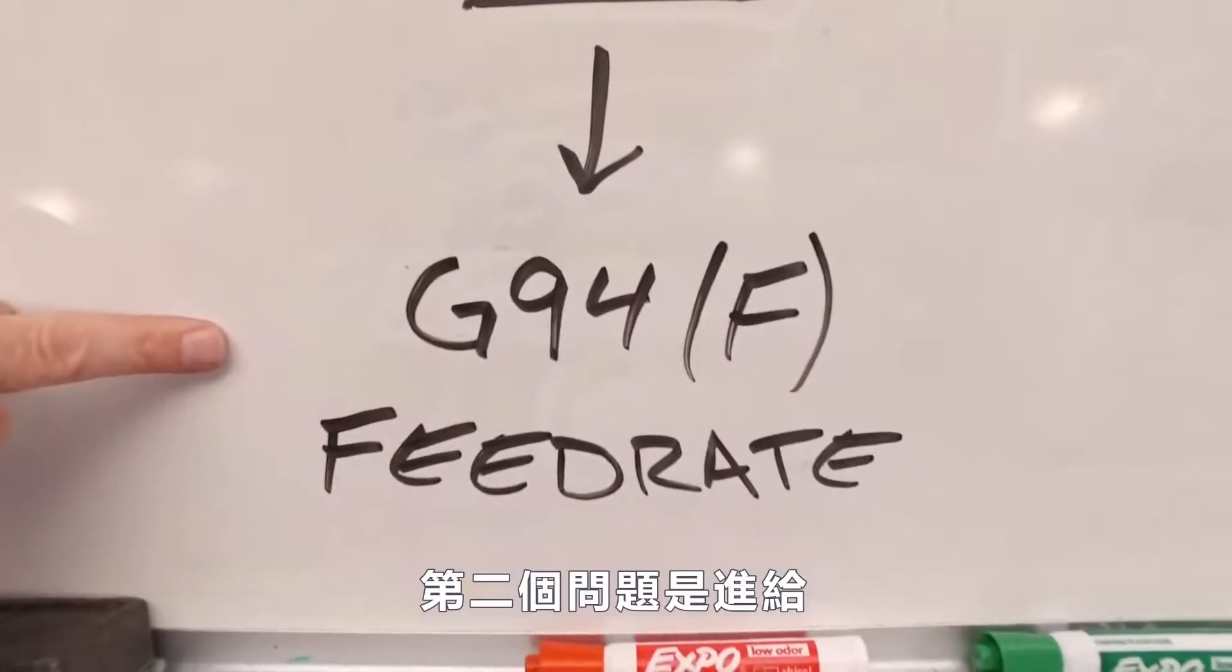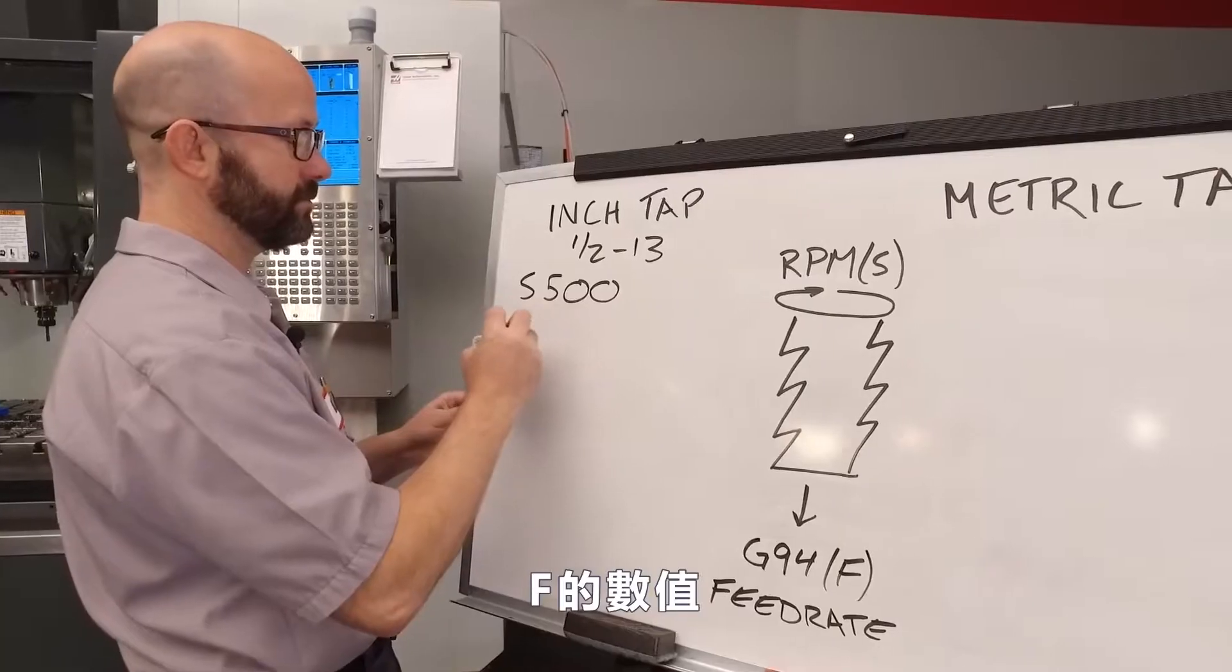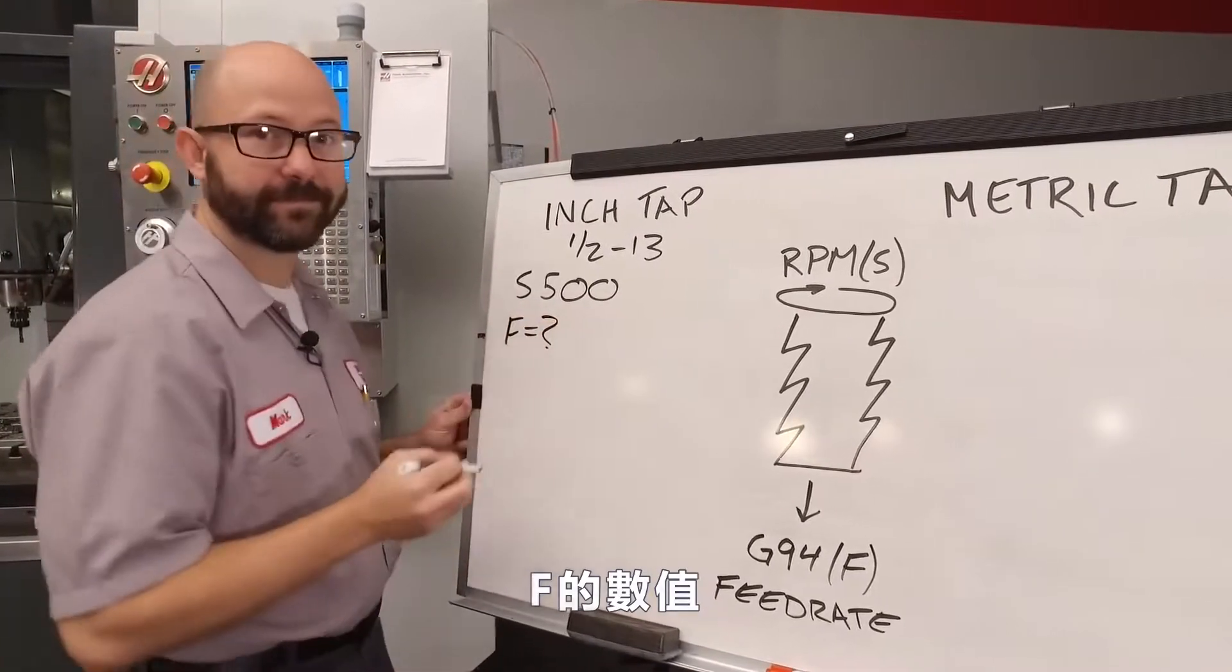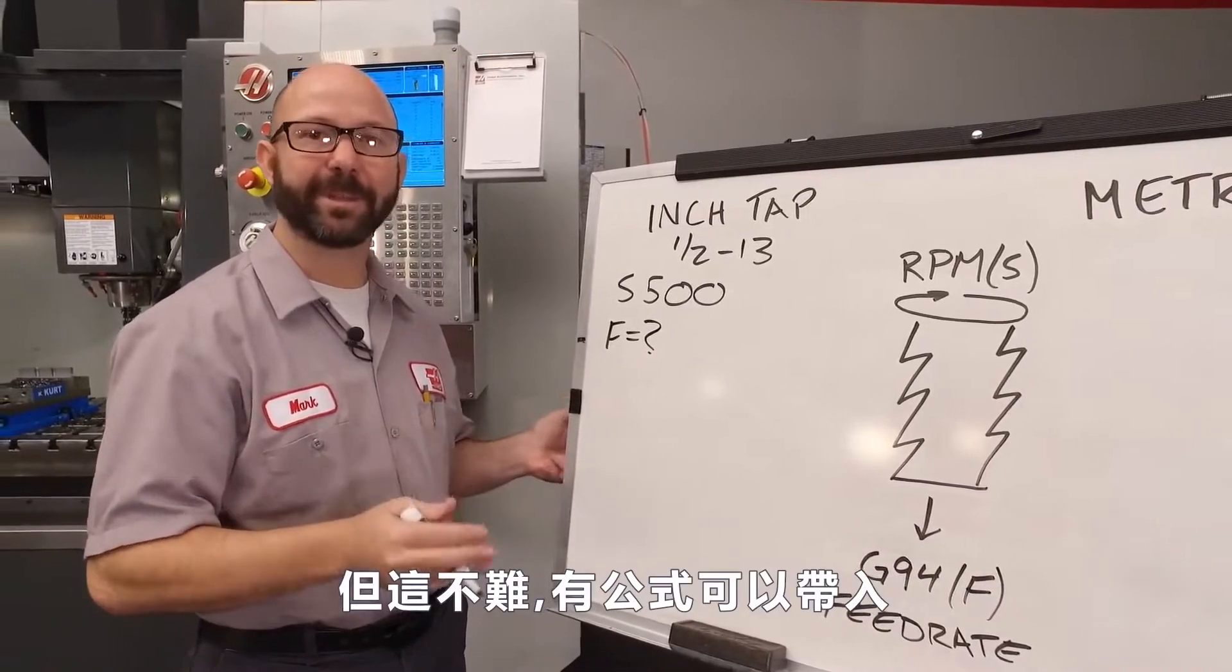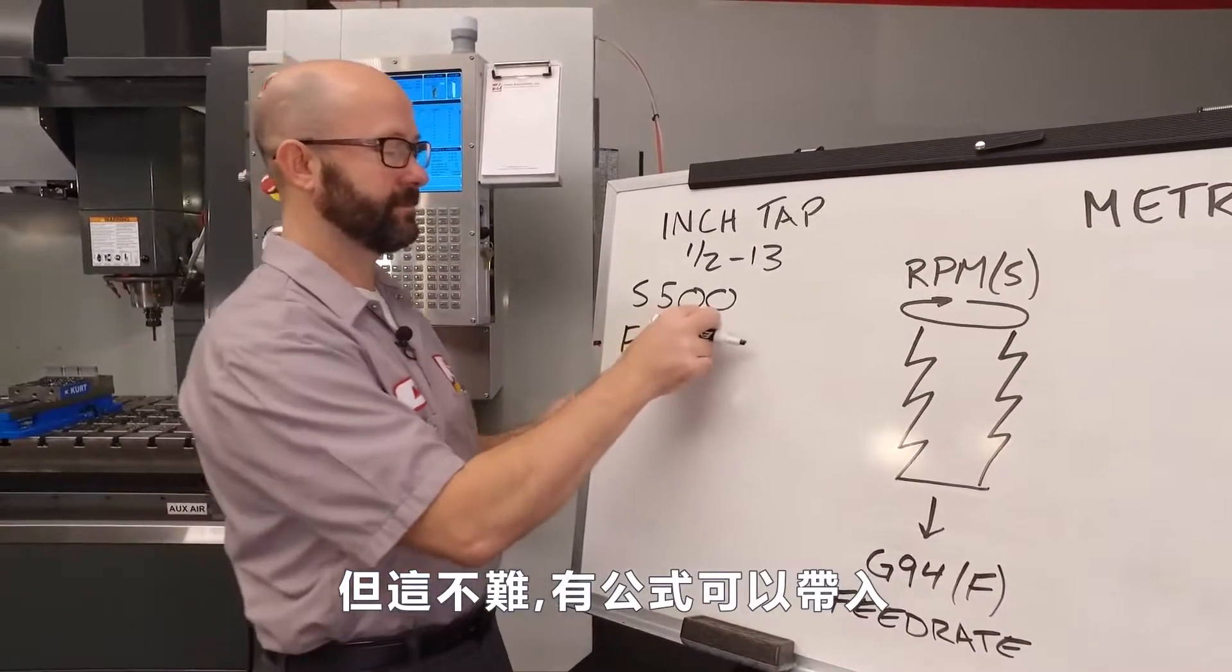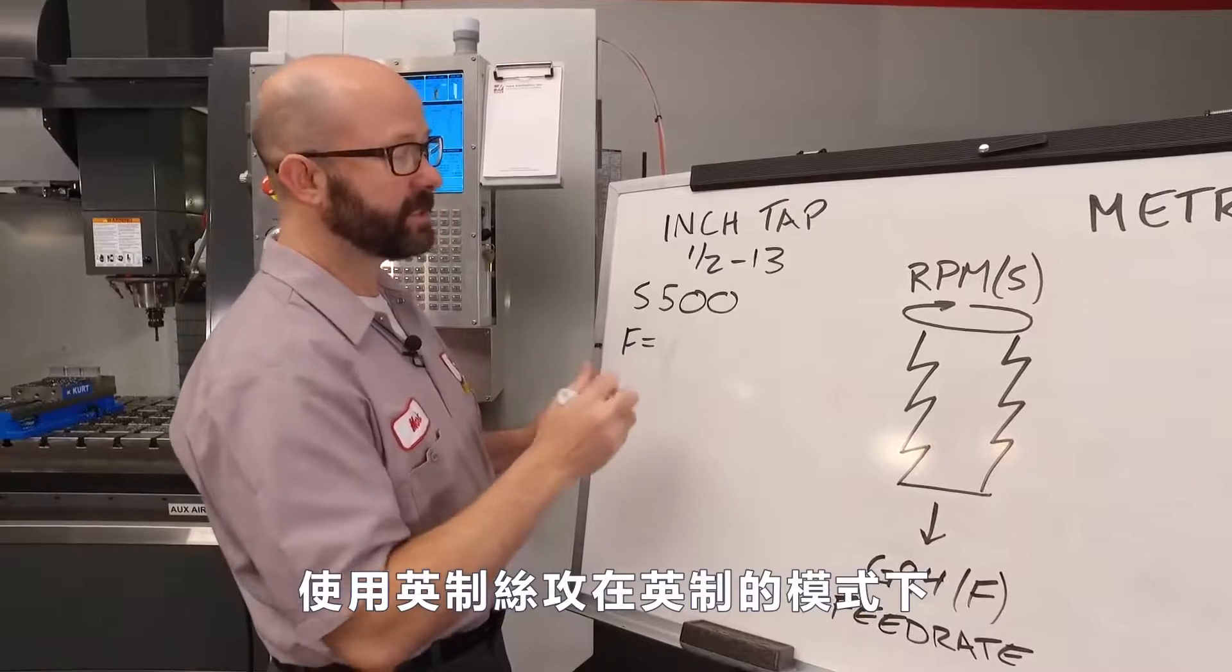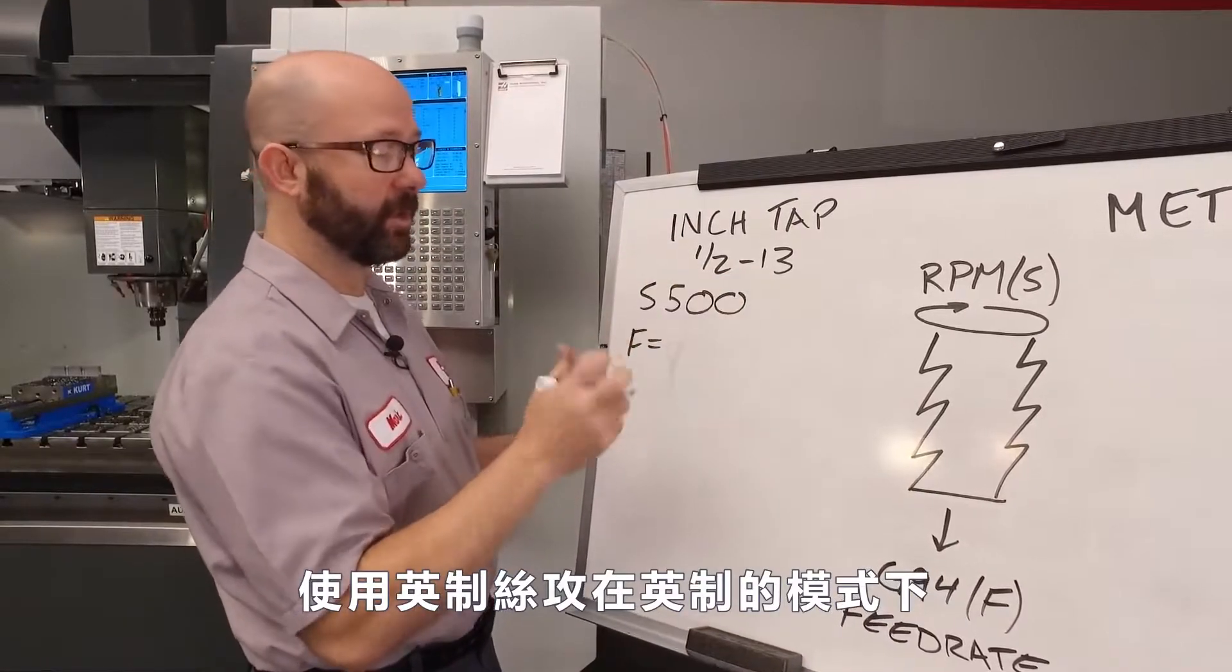The second piece to our puzzle is our feed rate, our F value. This is where we have to put on our thinking caps, but it's not hard because we've got a formula. For us, using an inch tap in inch mode, our feed rate is going to be our RPM divided by our TPI.